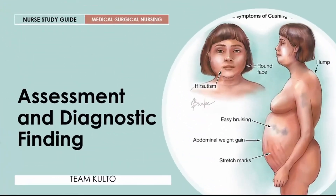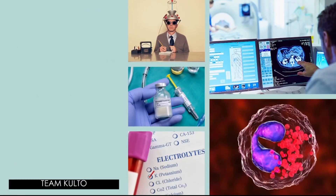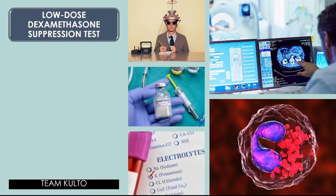Let's proceed with our assessment and diagnostic findings. How is Cushing's syndrome diagnosed? To detect Cushing's syndrome, the following are performed. First: the low-dose dexamethasone suppression test — dexamethasone 1 mg is administered orally at 11 p.m., and plasma cortisol level is obtained at 8 a.m. the next morning. This usually confirms the diagnosis of Cushing's syndrome.